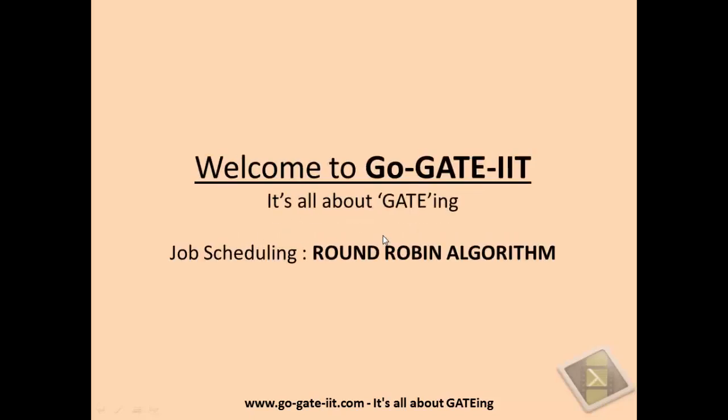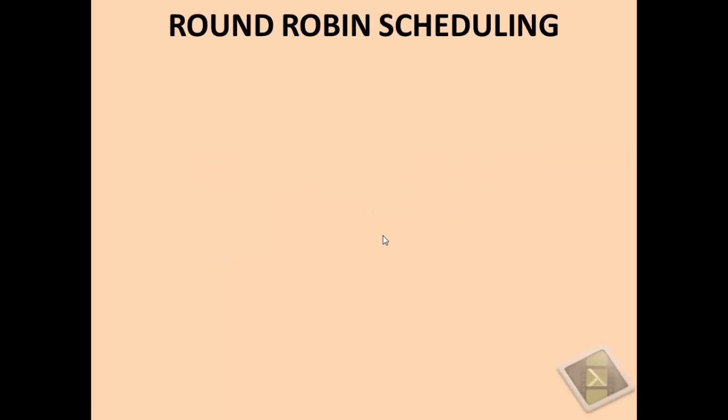Welcome to GoGetIt. Today we are going to see one of the most important job scheduling algorithms, the round robin algorithm, which is designed for time-sharing systems. Before we proceed further, make sure that you are well aware of some basic concepts like the Ready Queue, FCFS (first come first serve) algorithm, and the Gantt chart.